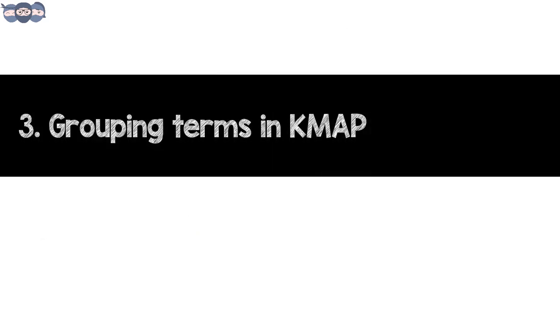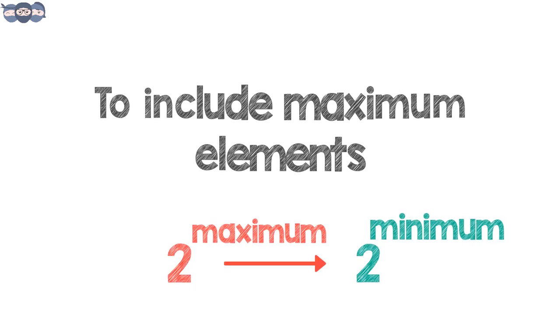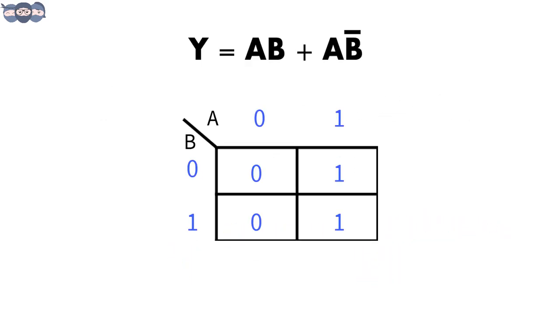The third step is to group the terms present in the kmap. Grouping should be done to include the maximum number of elements and it is formed from the highest power of 2 to lowest power of 2. In this case, the maximum size of grouping is 2 raised to 2, that is 4, since it has two terms A and B. And the smallest size of grouping is 2 raised to 0 equals 1, which means there is a single literal present and we couldn't group it.